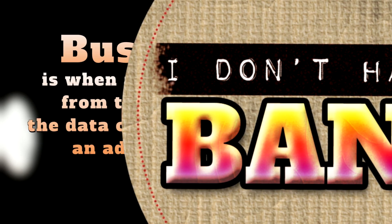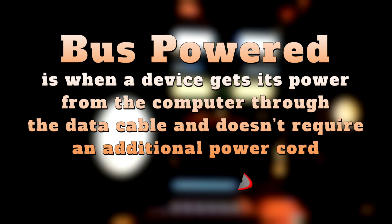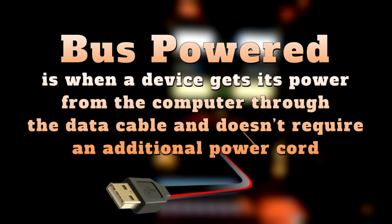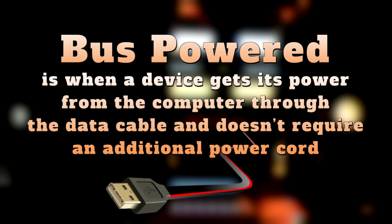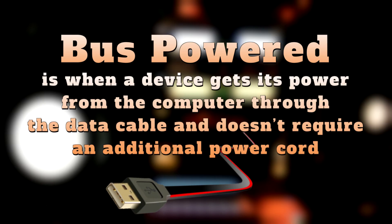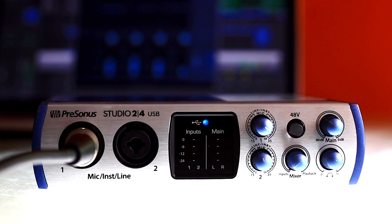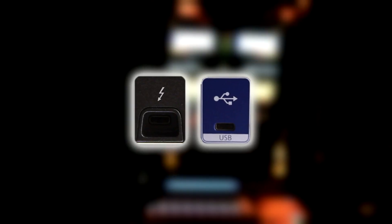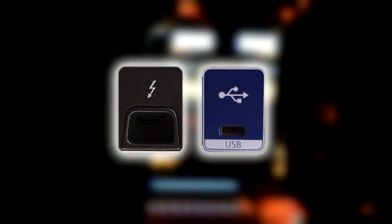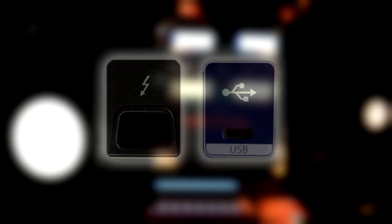Bus powered is when a device gets its power from the computer through the data cable and doesn't require an additional power cord. This is great if you need to move your interface around or record outside. USB and Thunderbolt 3 devices can be bus powered.